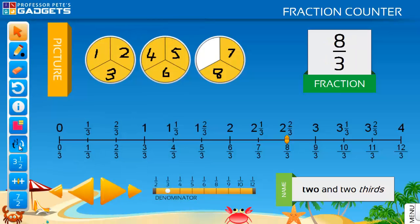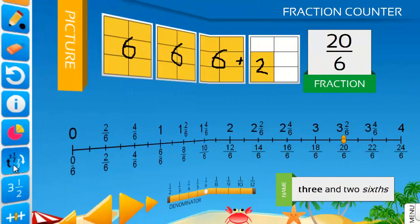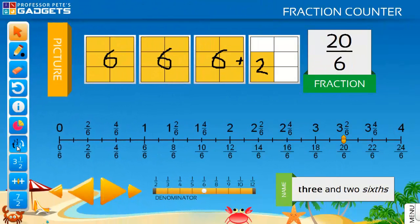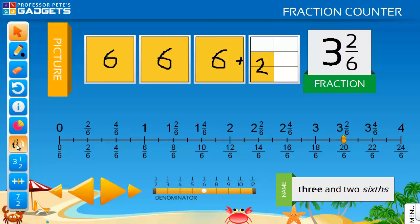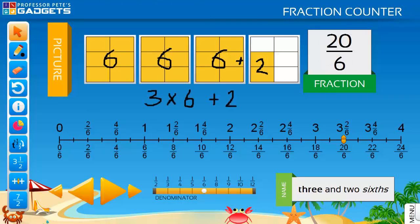After a few examples of this in one class, a student was heard to say, "I know a shortcut! It's easy! Just multiply the whole number by the denominator and add the numerator." Yes, students can work out their own formula.